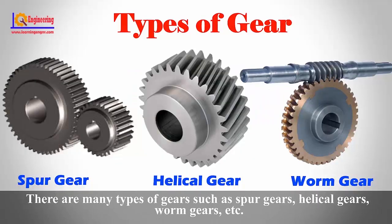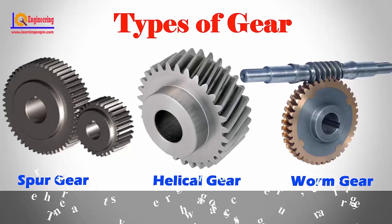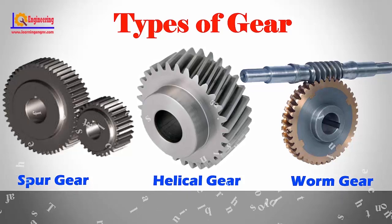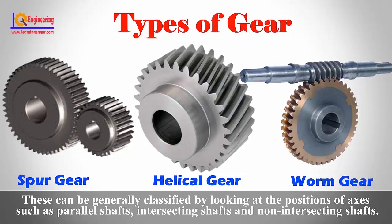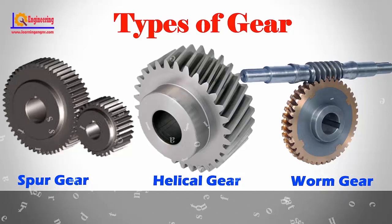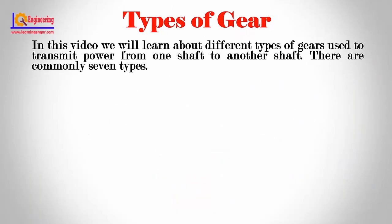There are many types of gears such as spur gears, helical gears, worm gears etc. These can be generally classified by looking at the positions of axes such as parallel shafts, intersecting shafts and non-intersecting shafts. In this video we will learn about different types of gears used to transmit power from one shaft to another.